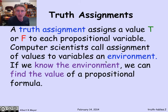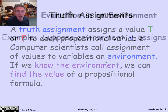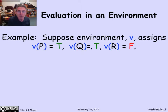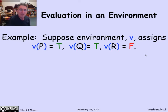Let's look at an example of three variables — p, q, and r — that are true-false valued. I've got an environment v in which p is true, q is true, and r is false. So v of p is T, and so on. I'm thinking of v as a function that maps a variable to its value.